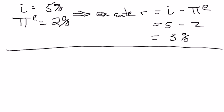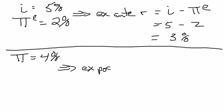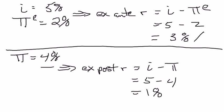Now, suppose things don't turn out as expected. Suppose a year from now you look back and say the inflation rate wasn't the 2% that you expected — it actually was something much higher, like 4%. In that case, the real interest rate that you actually end up paying — the ex-post real interest rate — is the nominal interest rate minus the actual inflation rate over the life of the loan: 5% minus 4% equals 1%. So you expected to pay 3% to borrow money, but you actually ended up only paying 1%.